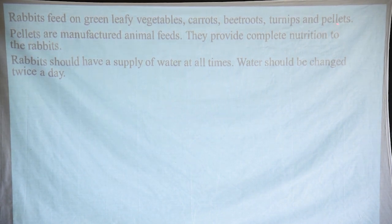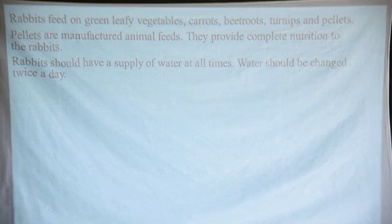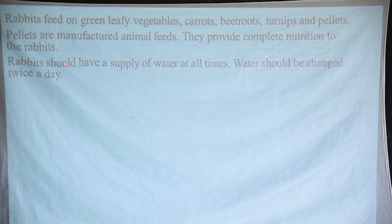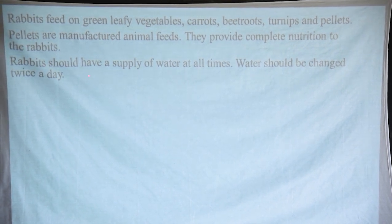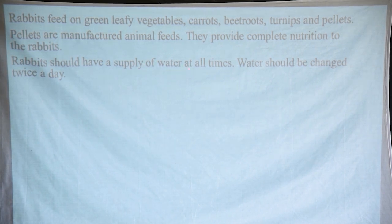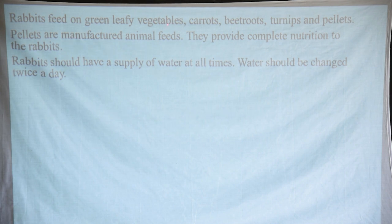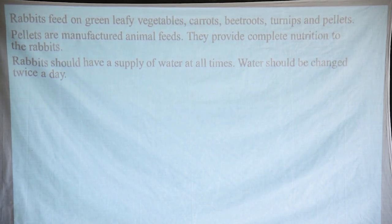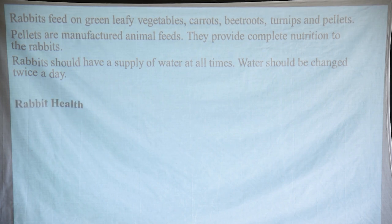When you come to the pellets — pellets are commercial feeds. They are feeds which are manufactured, so you can easily buy them. They provide a complete diet for the rabbits for nutrition. Rabbits should also have a supply of water at all times. Having looked at the different feeds of rabbits like vegetables, carrots, beetroots, turnips, and pellets which are commercial feeds, we should also provide water to rabbits to make a complete diet for our animals. At least twice a day, we change the water for the rabbits to avoid the spread of diseases.